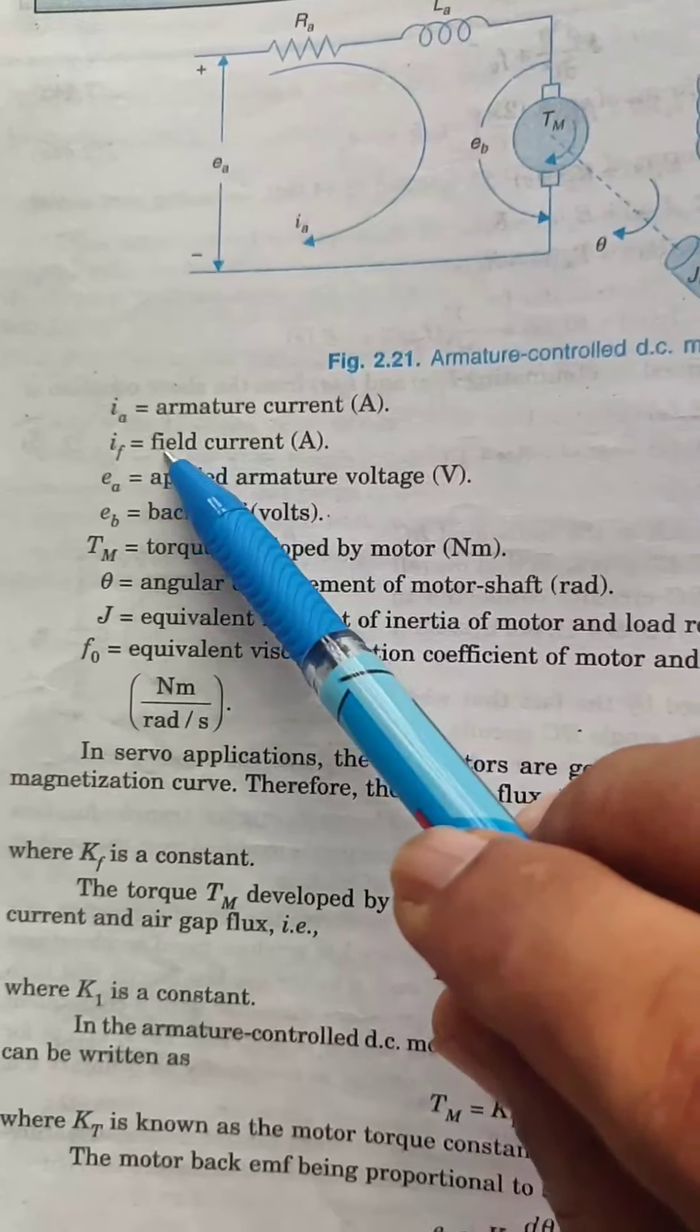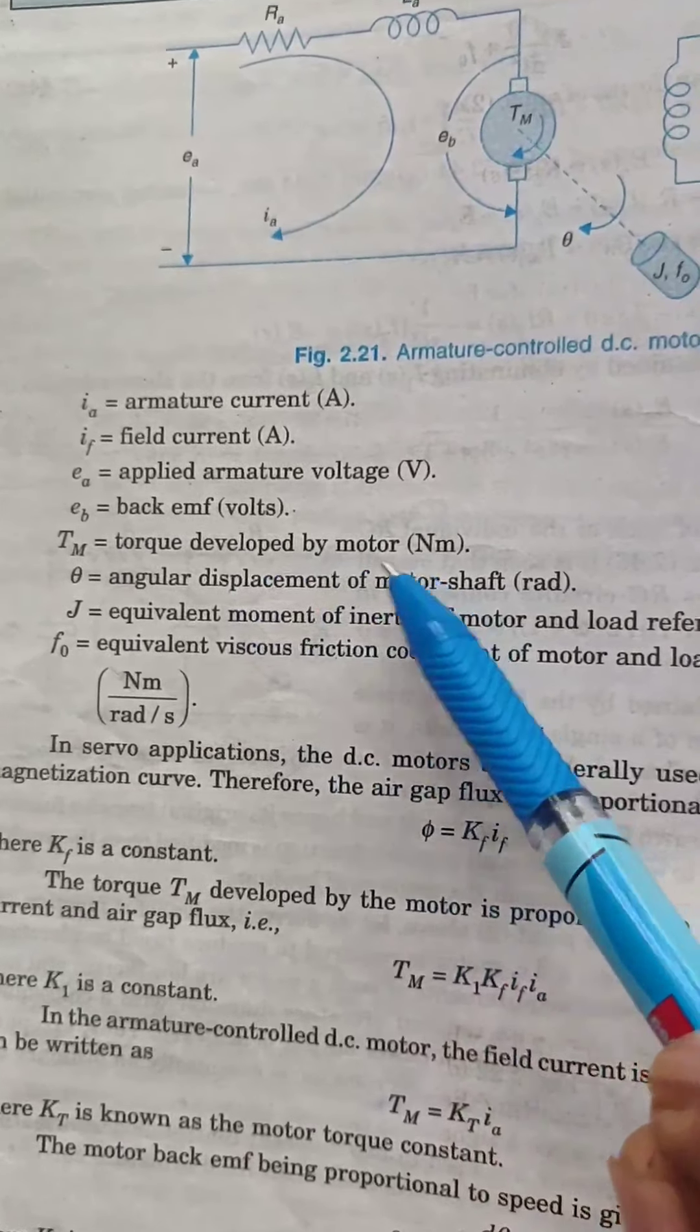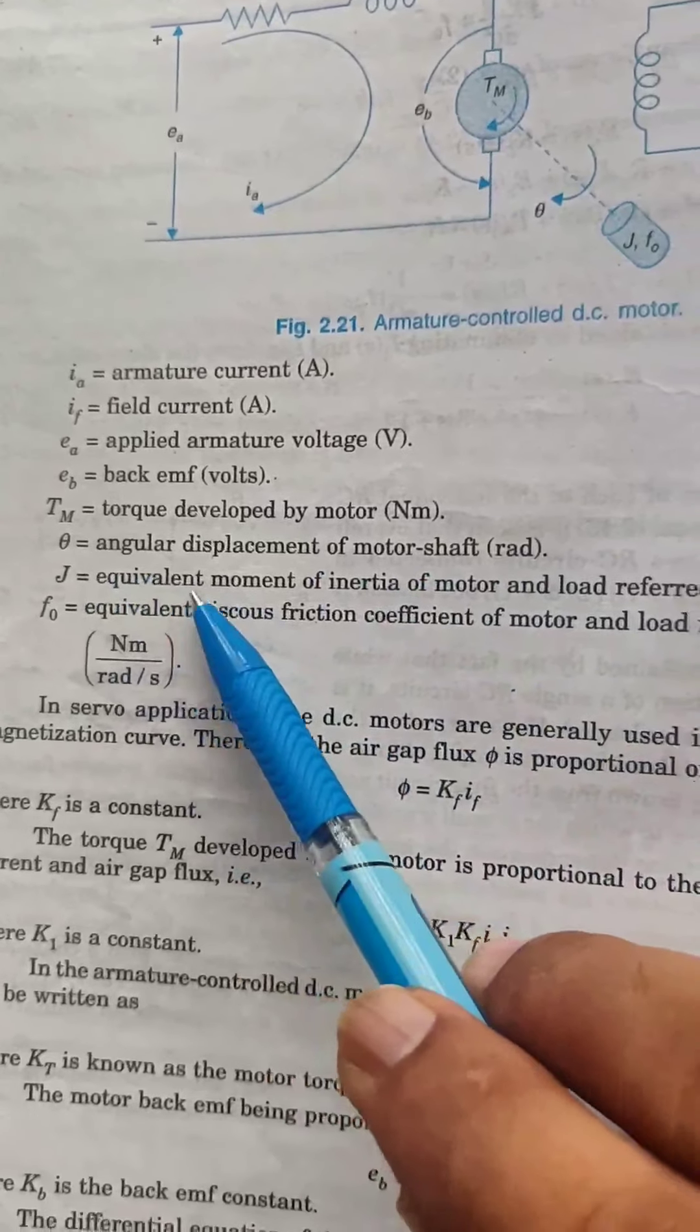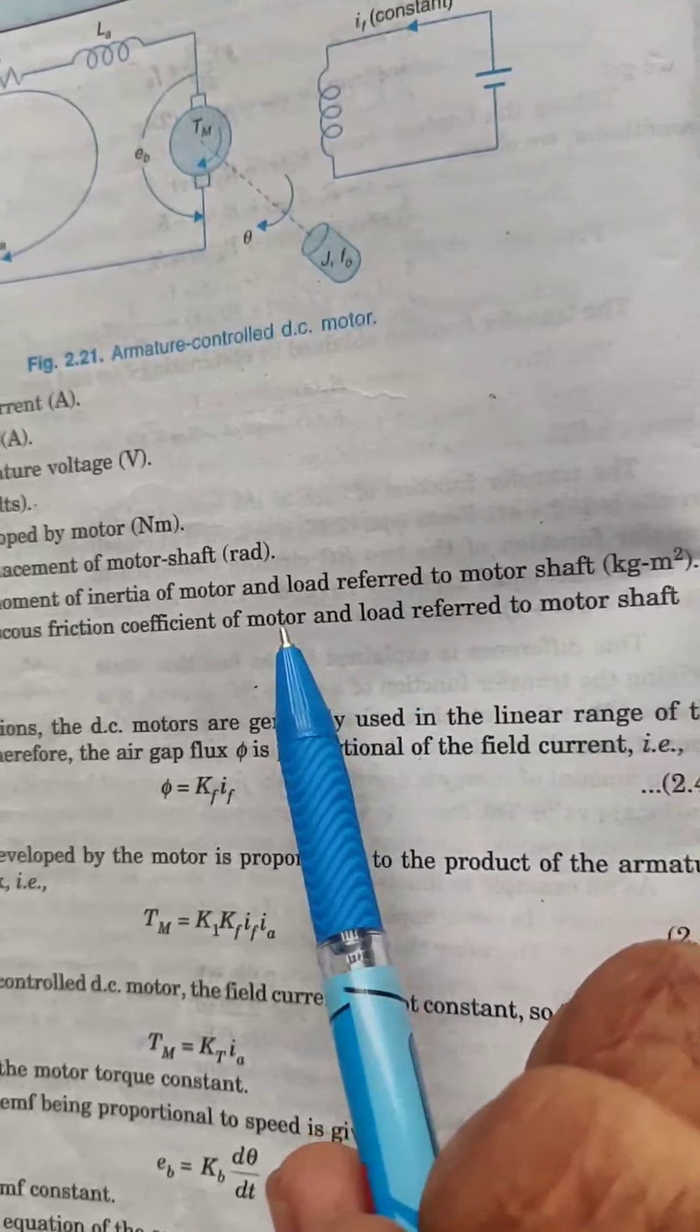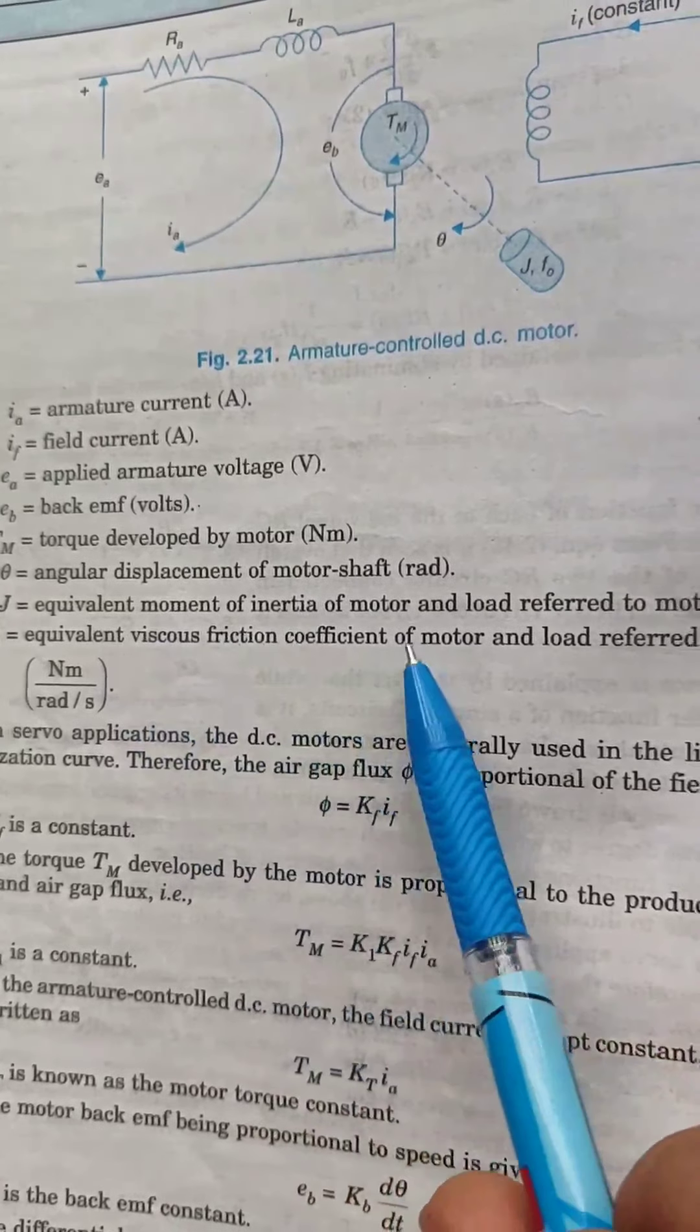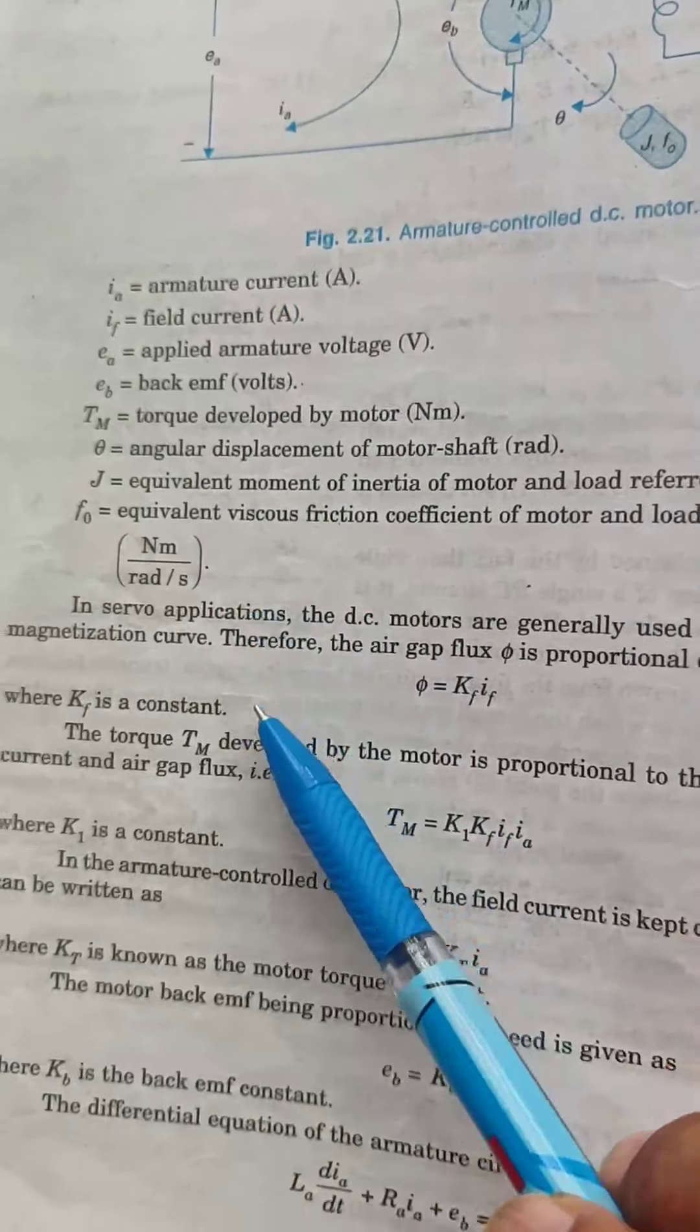IA is armature current, IF is field current, EA is applied armature voltage, EB is back EMF, TM is the motor torque developed, theta is the angular displacement of the motor shaft, J is the equivalent moment of inertia of the motor and load referred to the motor shaft side, and F0 is the equivalent viscous friction coefficient of motor and load.